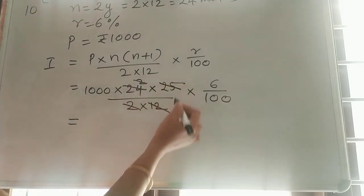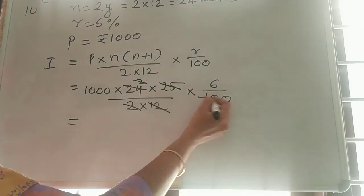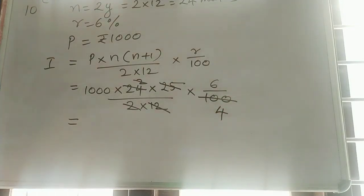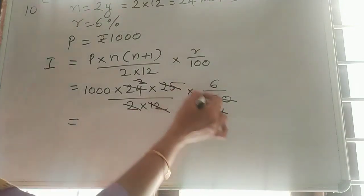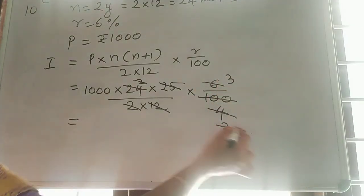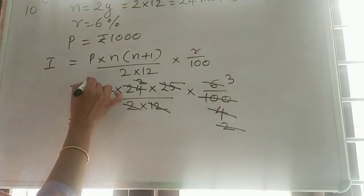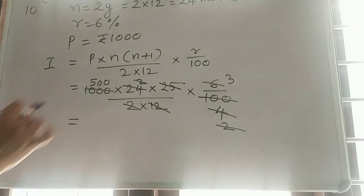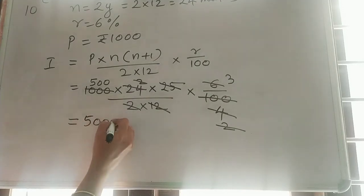Next, this 25 we can cancel. 25 and 100 we can cancel 4 times. Then, next again we can cancel this. 4 and 6, 2 times. Here 3 2's are 6. Then, here 2 5 2's are 10. Then, 0 0. So, what will be 5 3's? Final answer we got it as 500 into 3 which is equal to 1500.